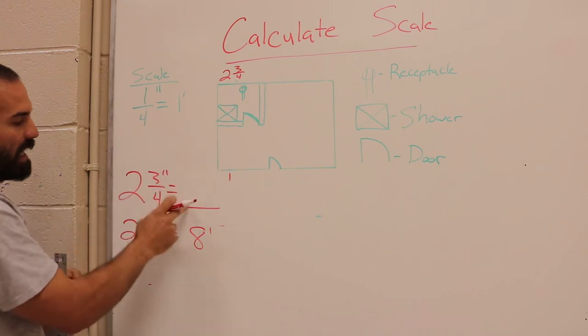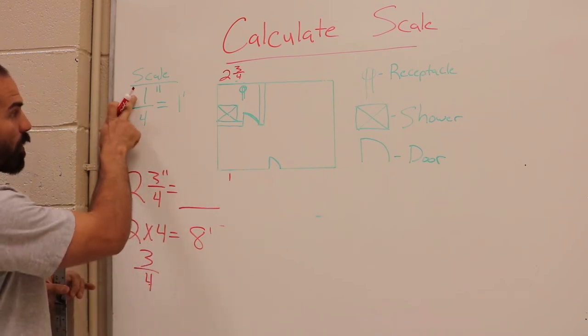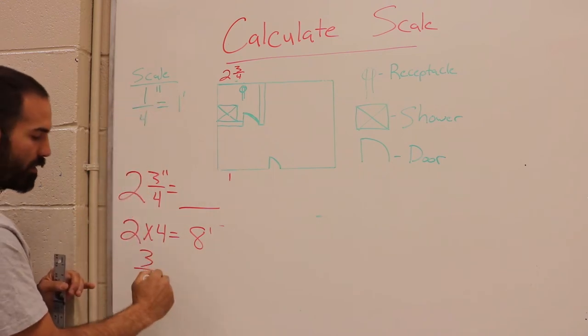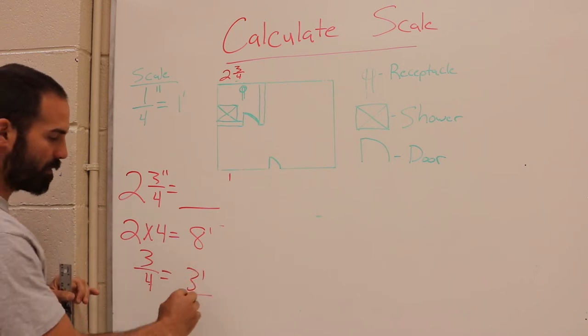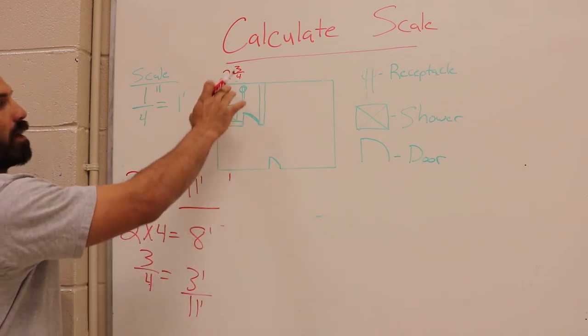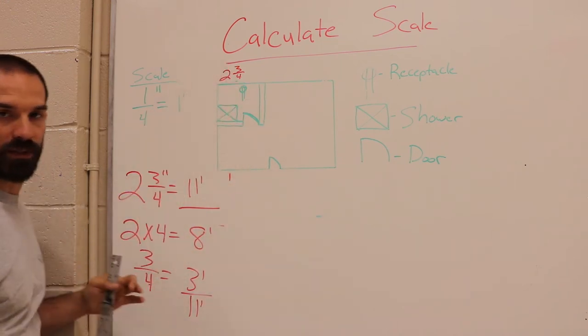Then I take my increments, which is 3/4. We know that one quarter equals one foot. Therefore three quarters—I'm going to use my numerator up here—would equal three feet. I add those up: 11 feet. That's my measurement. So that electrician would come off that wall 11 feet and that's where that receptacle would land.